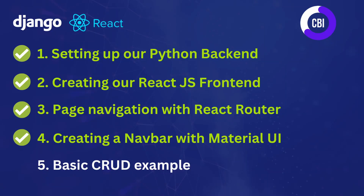Hi everyone and welcome to a new video on the CBI channel. In this tutorial series we're developing a full stack application using Python Django as our backend and React.js as a frontend. This is not the first video in this tutorial series. Previously we've already set up our Python Django backend, created our React.js frontend, enabled page navigation with React Router, and created a navbar using Material UI.